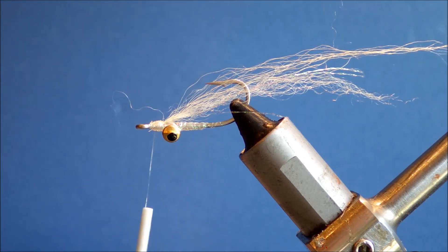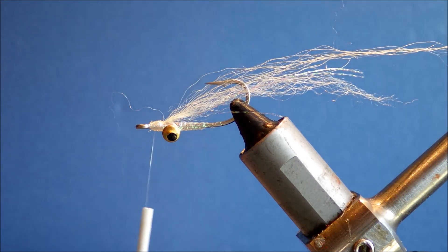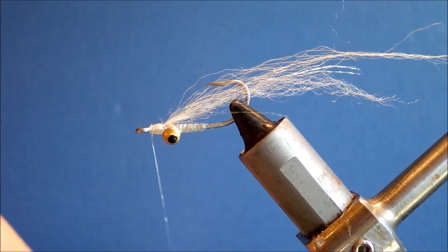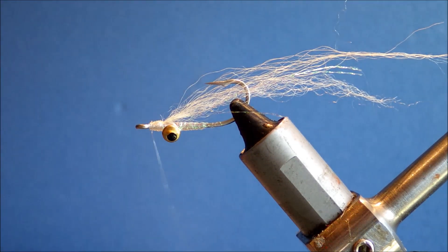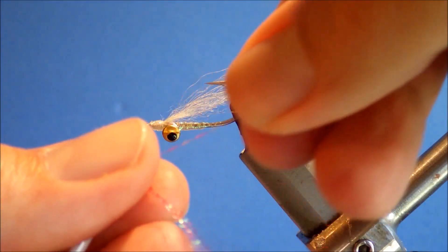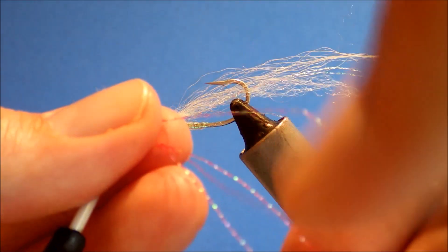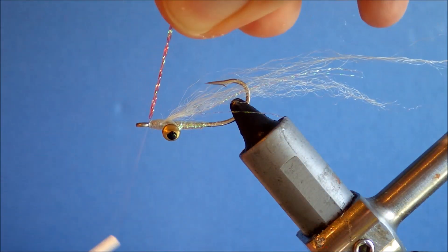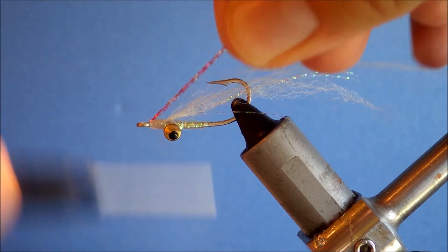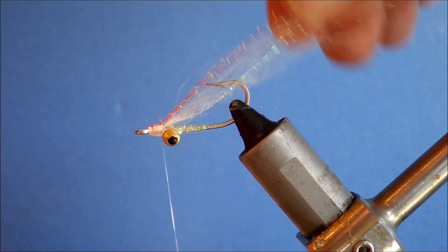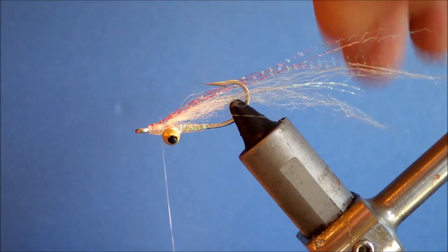So that's the last part of the wing is just four strands of red crystal flash. And what I like to do is take the thread right to the hook eye. And then I fold the crystal flash over my thread, catch it on top, and just wind it back. And that will be a nice wing.